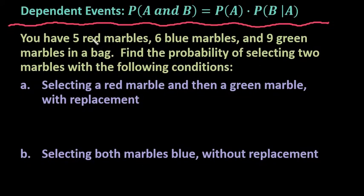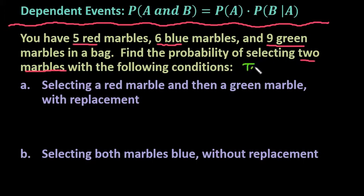We have five red marbles, six blue marbles, and nine green marbles in a bag. We're going to find the probability of selecting two marbles with the given conditions. To find the probability, we need to know the total number of marbles. Five plus six gives us 11, and 11 plus nine gives us 20. So we have a total of 20 marbles in the bag.